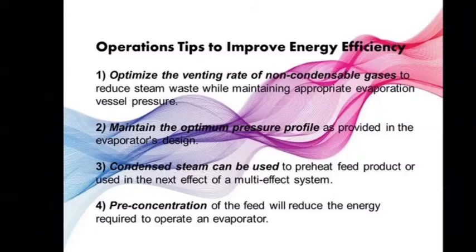Operation tips to improve energy efficiency. The following provides evaporating practices that can reduce energy consumption in your evaporators. First, optimize the venting rate of non-condensable gases to reduce steam waste while maintaining appropriate evaporation vessel pressure. Non-condensable gases in the evaporation vessel increase pressure, which increases the boiling point and heat requirements. Second, maintain the optimum pressure profile as provided in the evaporator's design. Excess pressure inhibits evaporation by raising the boiling point. Third, condensed steam can be used to preheat feed product or used in the next effect of a multi-effect system.